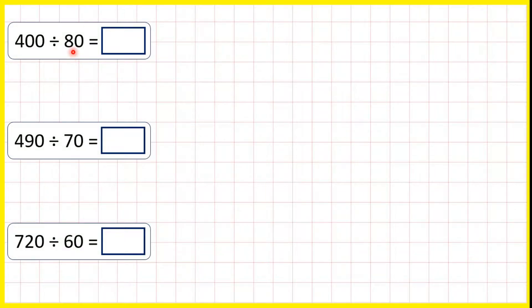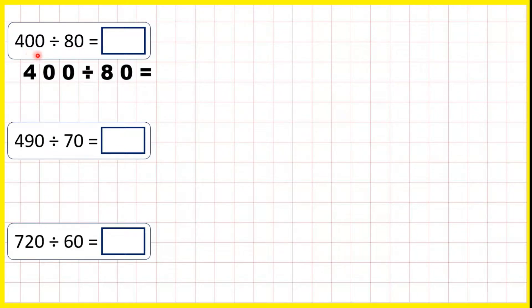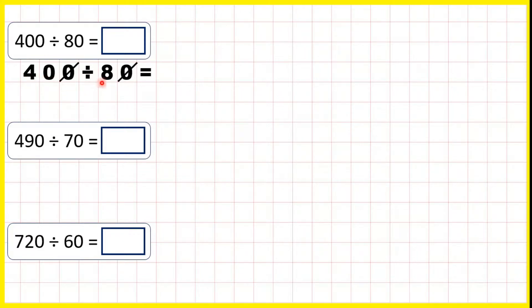For these questions we're dividing by a multiple of 10, and we can do this mentally. If we write out our first question, 400 divided by 80, what we can do is cancel our two zeros. And that leaves us with 40 divided by 8. Now 40 divided by 8 is 5, so our answer is 5.